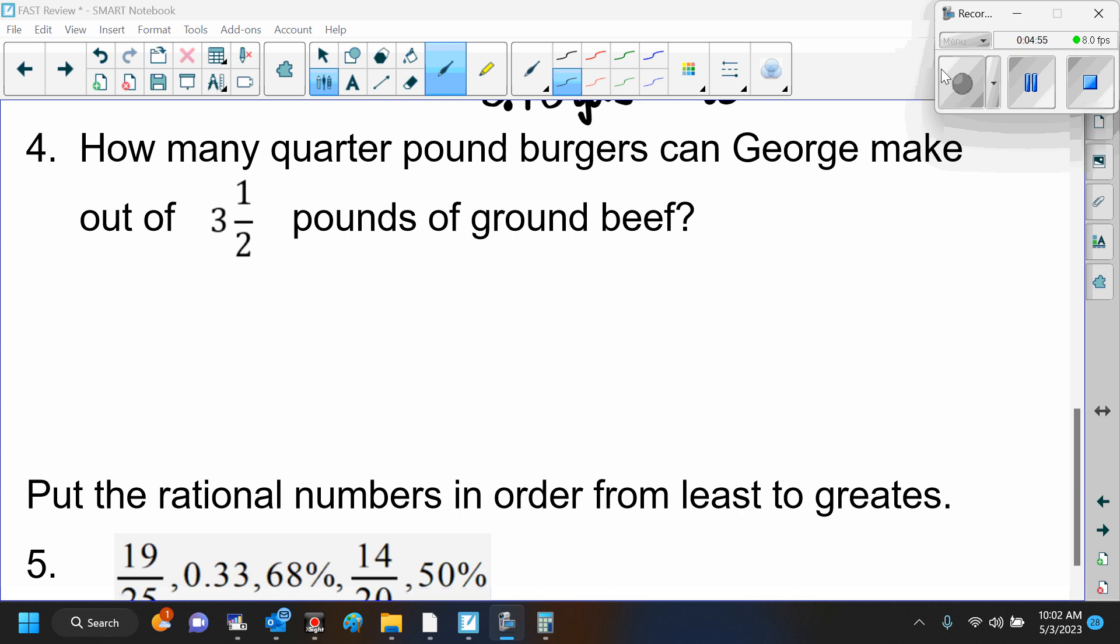Number 4 says, how many quarter pound burgers can George make out of 3 and a half pounds of ground beef? Important information is that we have quarter pound burgers and we have a whole slab of ground beef, 3 and a half pounds. So we're going to do 3 and a half divided by 1 fourth.